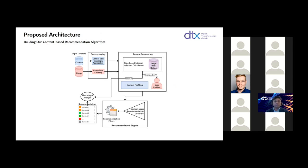Our main features highlighted in this work are the content genres — comedy, action, drama, etc. Based on that feature, we create user profiles and also content profiles. Based on those profiles, we prepare recommendations for each user and present them. This is the simplified architecture of the system.